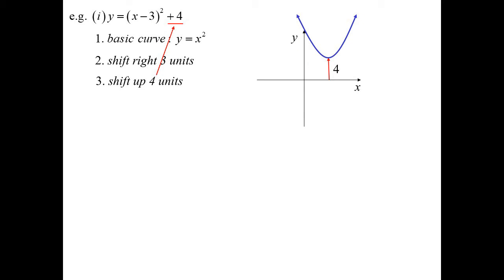First thing we need to work out is what's the basic curve we're playing with here, and it's our parabola, y equals x squared. Now we have two translations happening. We're shifting right three units. So let's move it over. And we're shifting up four units. So let's shift it up. So our origin's been moved to the point three, four.